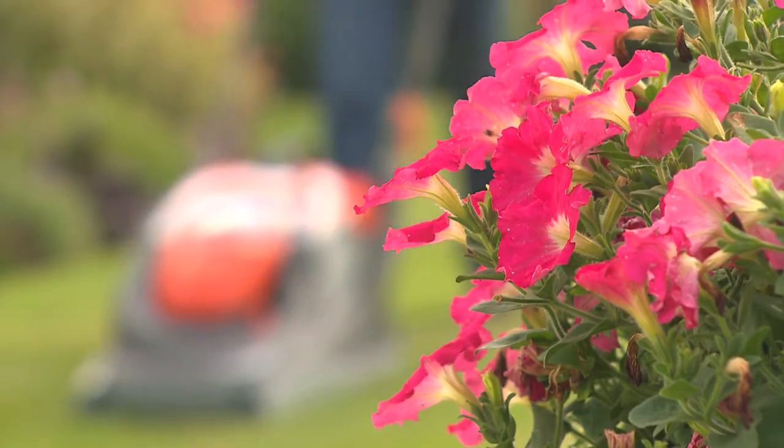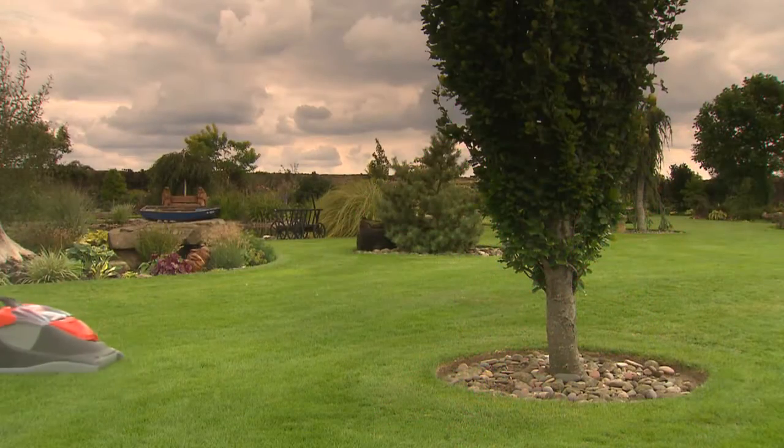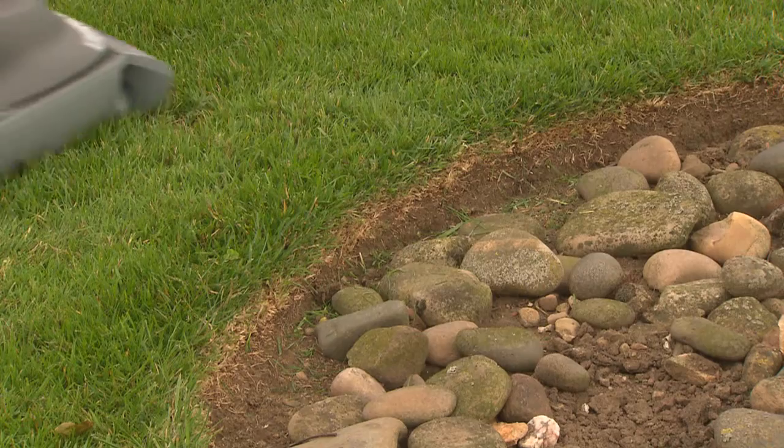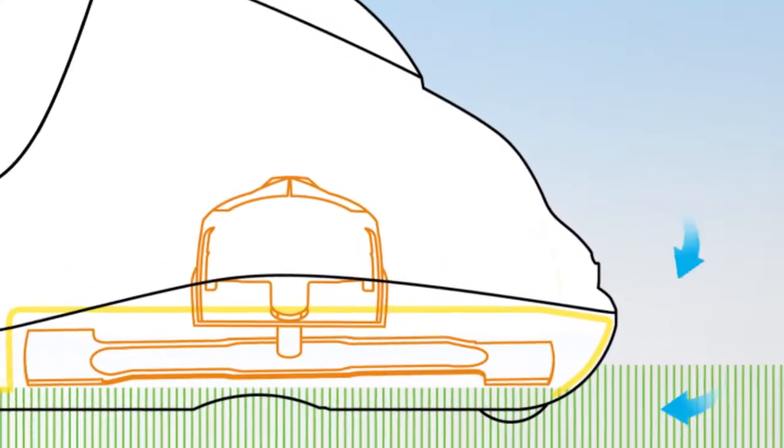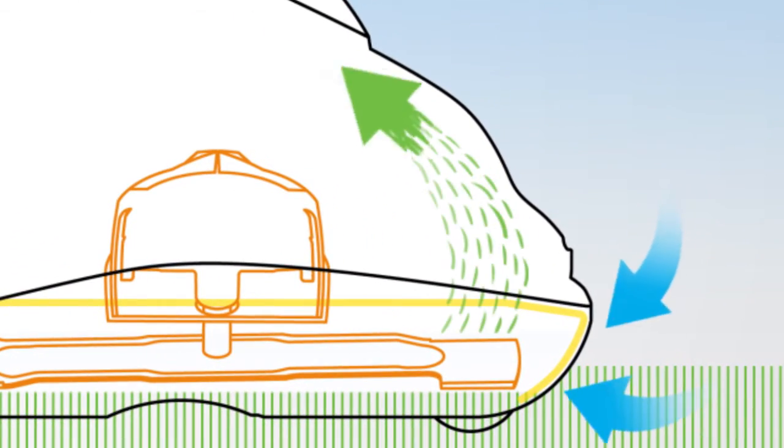Where other mowers would have struggled, the Flymo UltraGlide excels, giving a closer cut and a tidier result by lifting the grass with a powerful vacuum before cutting for a super clean finish.